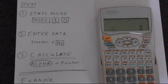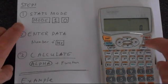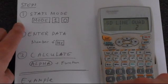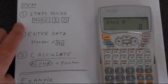The first thing we need to do is put it into the correct stats mode. So this is the first step. We'll press mode, then stat, and then want SD. You can think that stands for standard deviation.